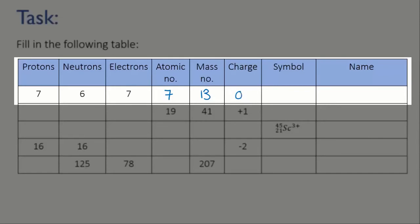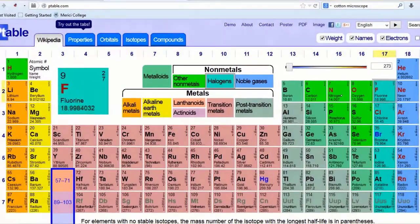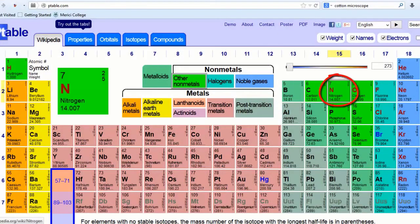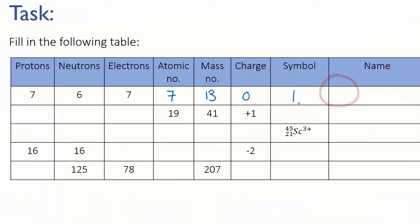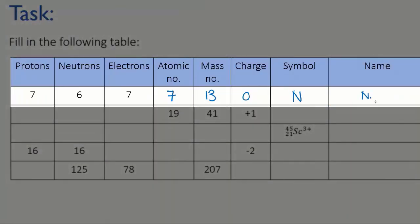Now, we need to look up the name and symbol. We know that the atomic number is seven, so we go to our periodic table and we look for atomic number seven and we find that it's nitrogen. So, the symbol is N, the name is nitrogen.